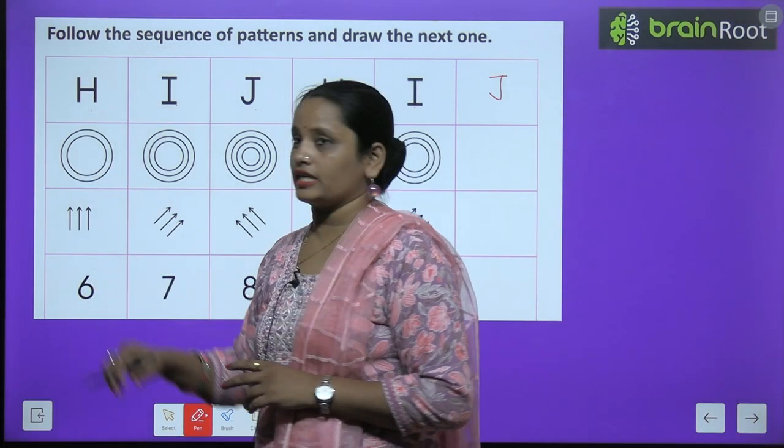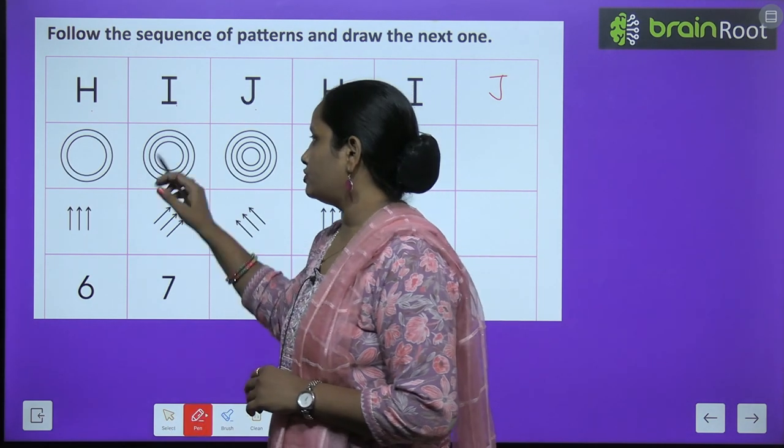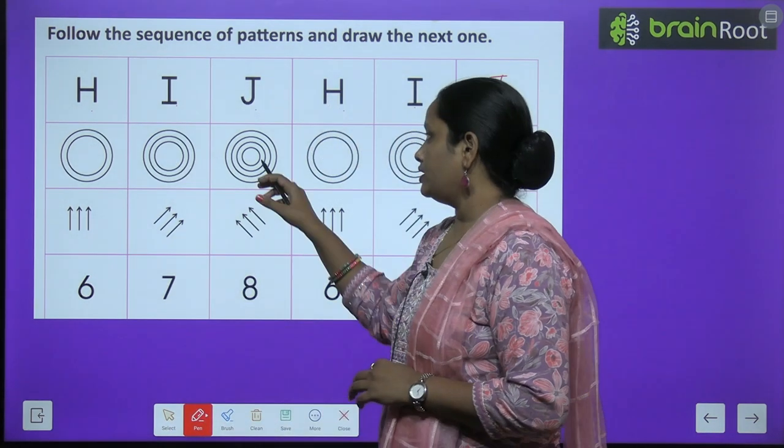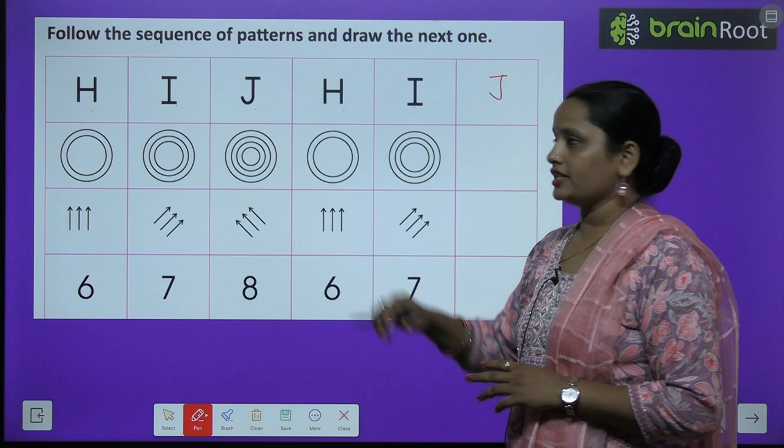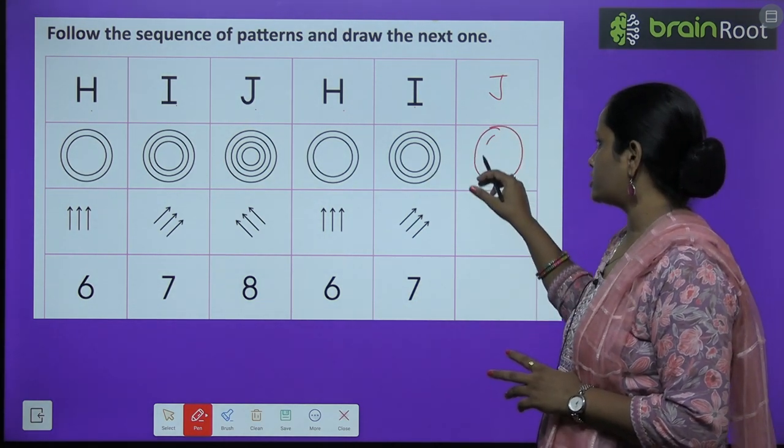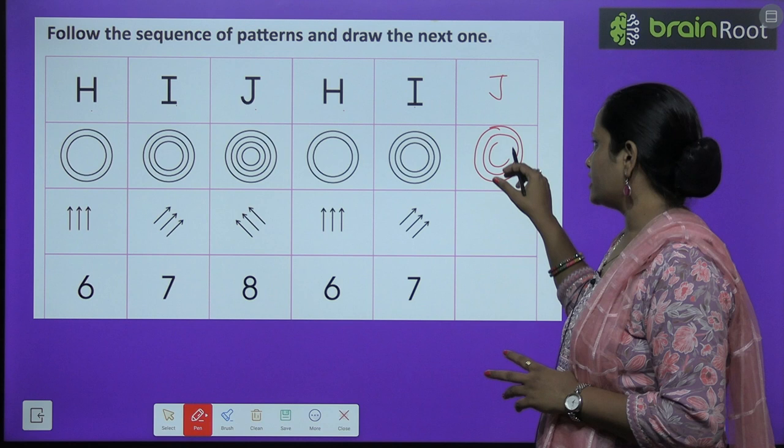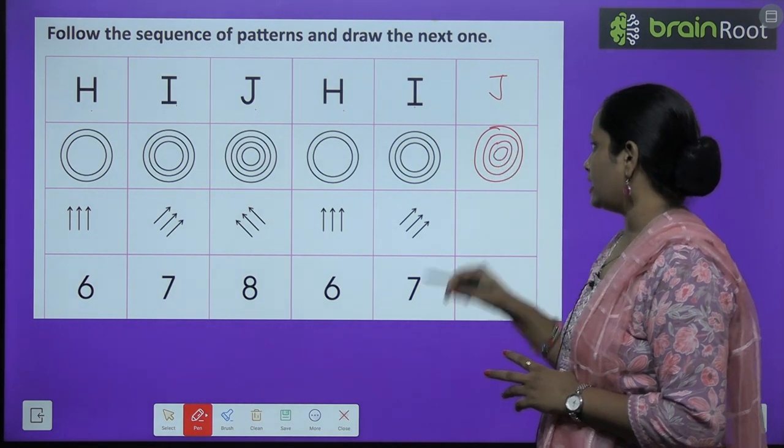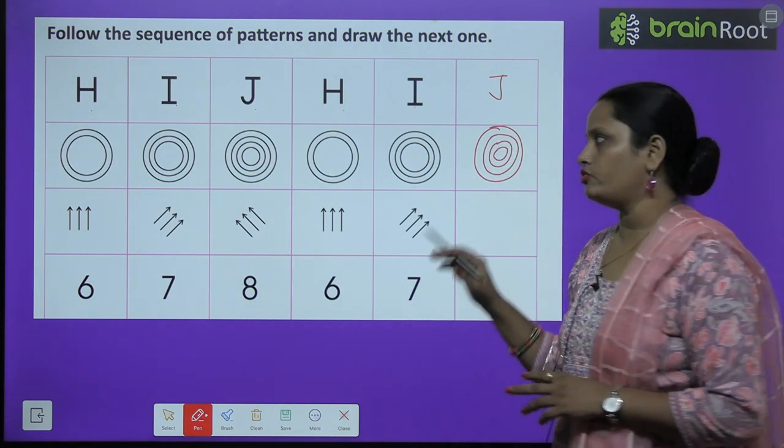Similarly, here in the first picture there are two circles. Here three circles. Here there are four circles. Two circles, three circles. We have to make four circles. So let's make. Yes, here are the four circles.